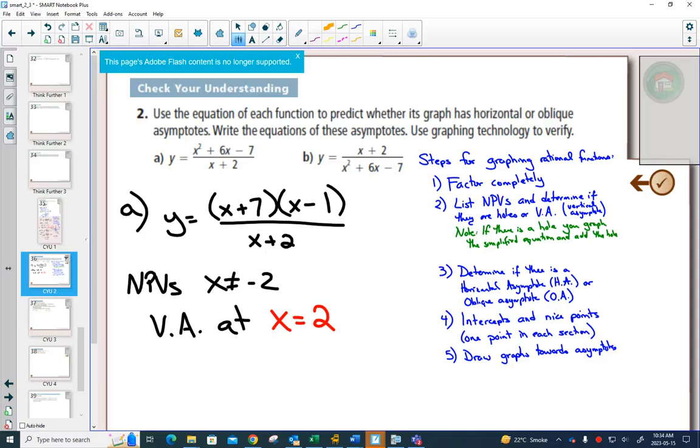Second, we look at horizontal asymptotes or oblique asymptotes. In this example, the degree is bigger in your numerator.